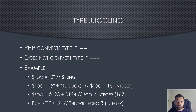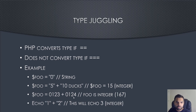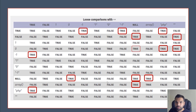Another example: 0123 plus 0124 — you'd expect 247, but the result is 167. Because of the leading zero, PHP treats these as octal values and converts them before adding. And if you echo '1' + '2', where both are strings inside double quotes, it will echo 3 instead of the string '12', which is what it ideally should produce. These are some of the weird operations going on in PHP.